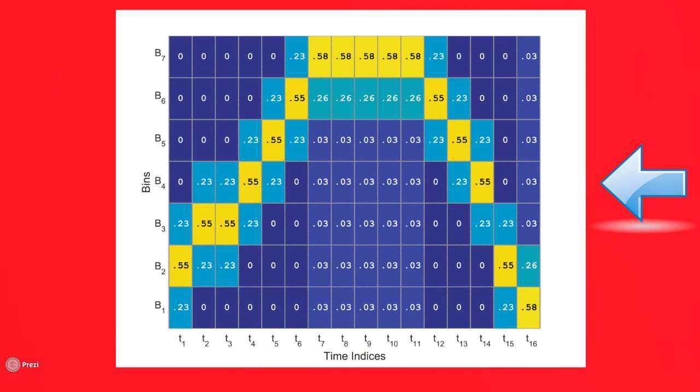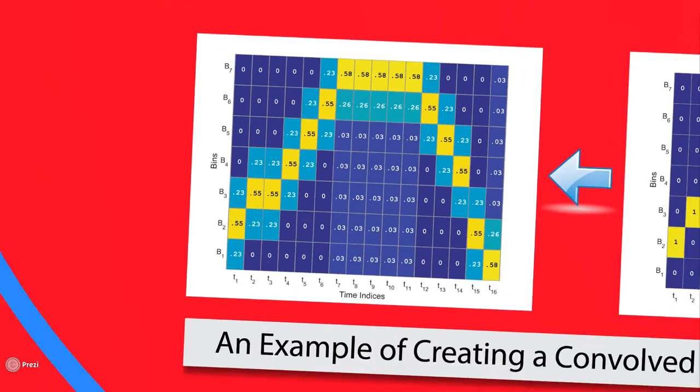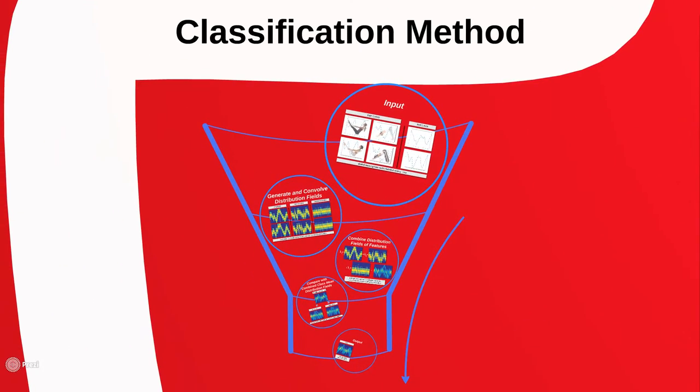The distribution field is convolved to spread the probabilities to nearby entries. The reason we do this is to minimize in-class data variability. Going back to our goal, we will use these distribution fields in our classification algorithm.